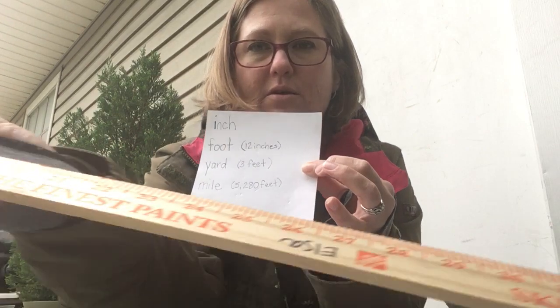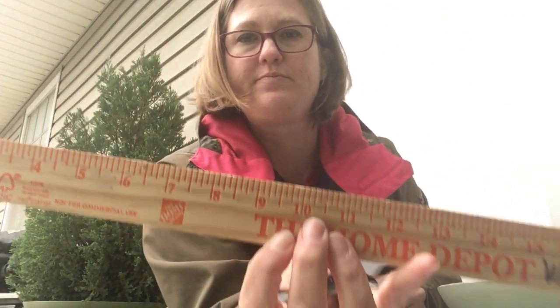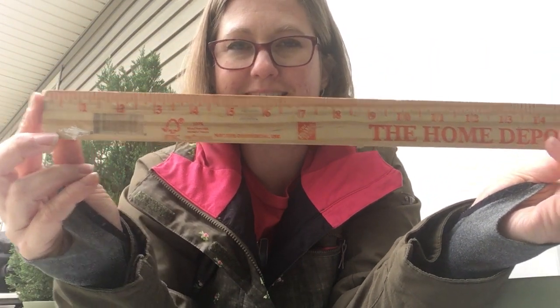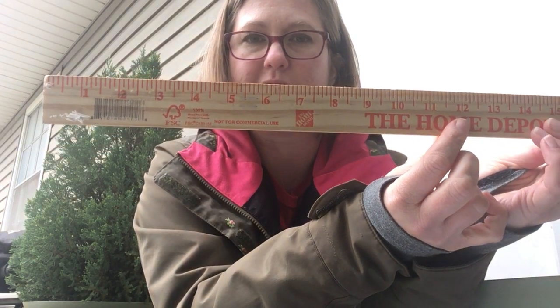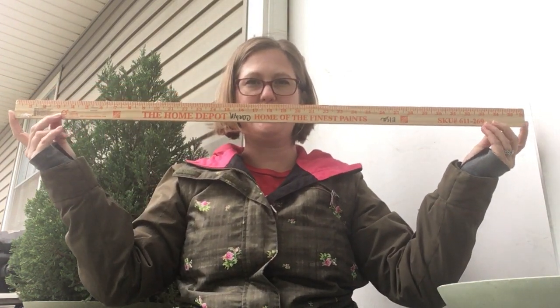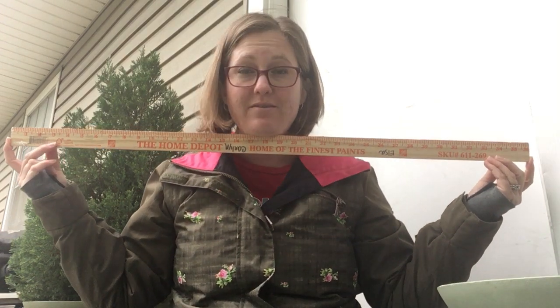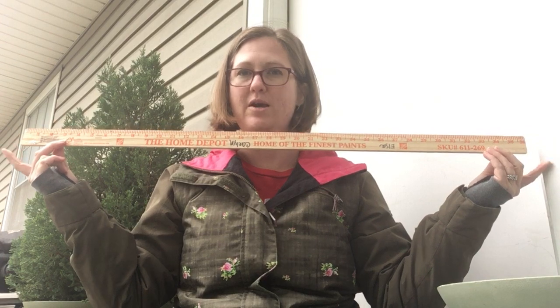I'll show you right here on this yardstick. From this end to here — that's one foot, so 12 inches is one foot. This stick from end to end is 36 inches, which equals three feet, which equals one yard. So this is a yardstick. Three feet equals one yard, and in sewing we use yards a lot to measure material.